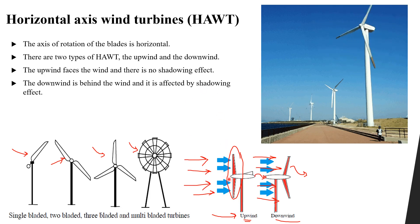The shadowing effect refers to the effect of tower components which reduce the wind speed, leading to lower generation of electricity. That is why we should always try to face the blades towards the wind. The vertical axis, by contrast, can operate in any direction.